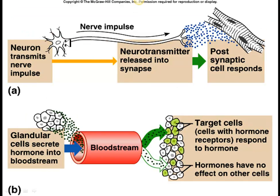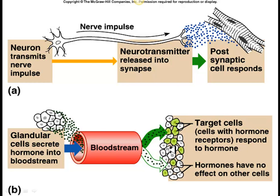Looking at the nervous system, you've got the neuron releasing a neurotransmitter and affecting a muscle — very direct, not a long-distance signaling system. Whereas a hormone can be released from a gland located nowhere near the target cells. It can travel through the bloodstream, like insulin or thyroxine, and affect many cells all over the body very far from that gland. Importantly, a hormone only affects cells that have receptors for it; cells without receptors remain unaffected.